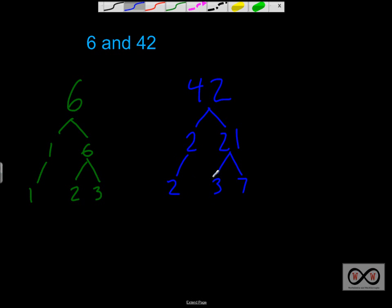Now we can do that prime number check. 2 is prime. 3? Yes, that's prime. 7? Only factors are 1 and 7, so yep, that must be prime as well. So there we go. We are done with this tree. The base of the tree, holding up that tree, consists of all prime numbers.